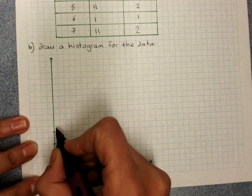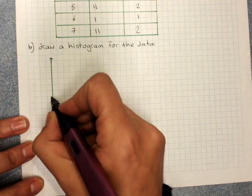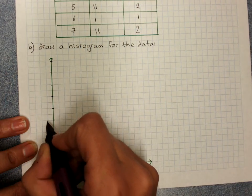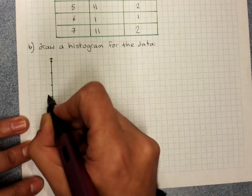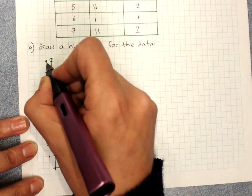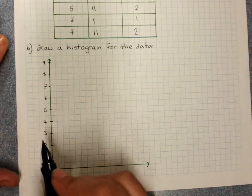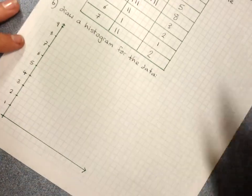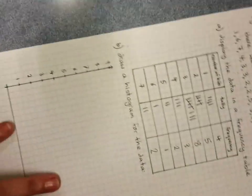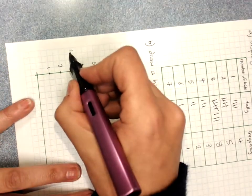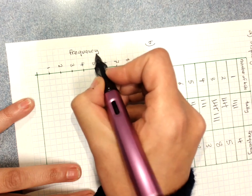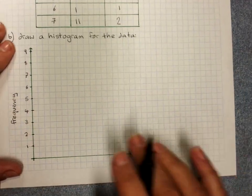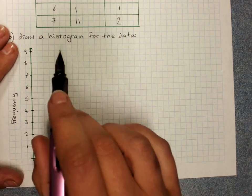Gradations on the grid lines. And again, we can call this frequency or we can call it number of people. And if we don't run out of space, we can always write it along the side like this.